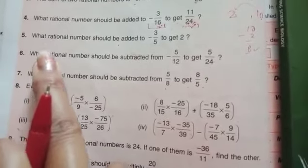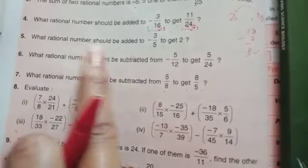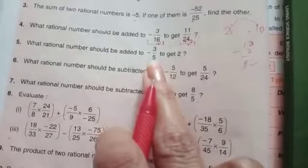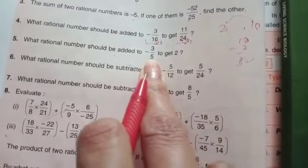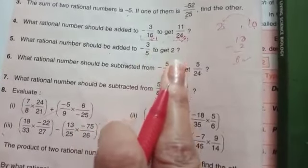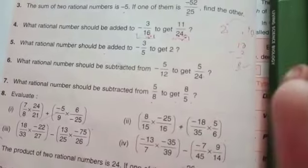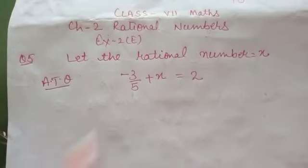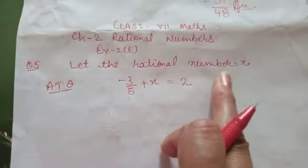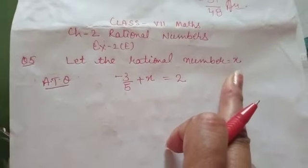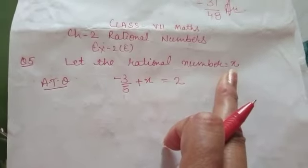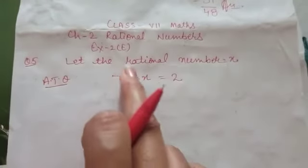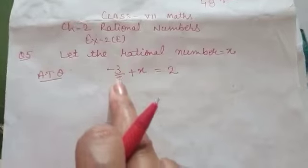This question asks: what rational number should be added? So, what we have to add, we will let the rational number equal to x — that is what we have to find. According to the question, he said what we should add in minus 3 over 5.